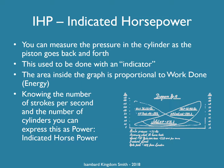The steam pressure in the cylinder used to be measured with a little device called an indicator, so indicated horsepower is simply horsepower measured using an indicator. The indicator would draw a loop showing the steam pressure as the piston goes back and forth. The area of the loop is proportional to work done — energy — and if you know the number of piston strokes per second and the number of cylinders you can calculate the indicated horsepower.